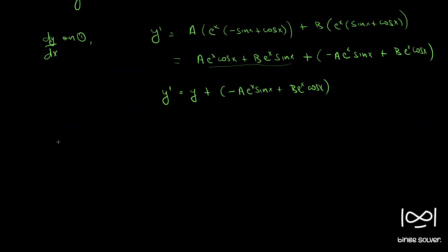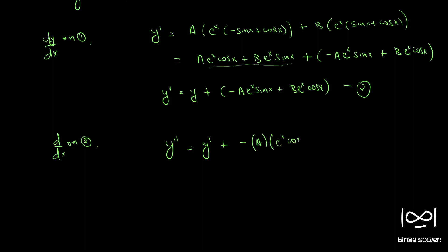Differentiating equation 2 one more time, we get y'' = y' + (−A·e^x·(cos(x) + sin(x)) + B·e^x·(−sin(x) + cos(x))). Expanding the additional terms gives −A·e^x·cos(x) − A·e^x·sin(x) + B·e^x·cos(x) − B·e^x·sin(x).